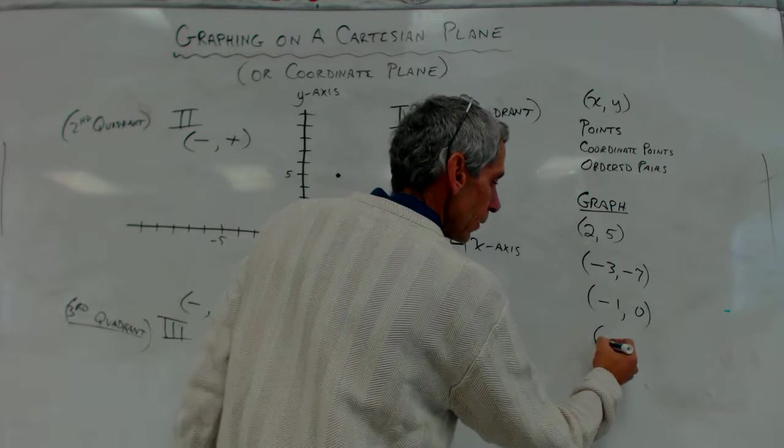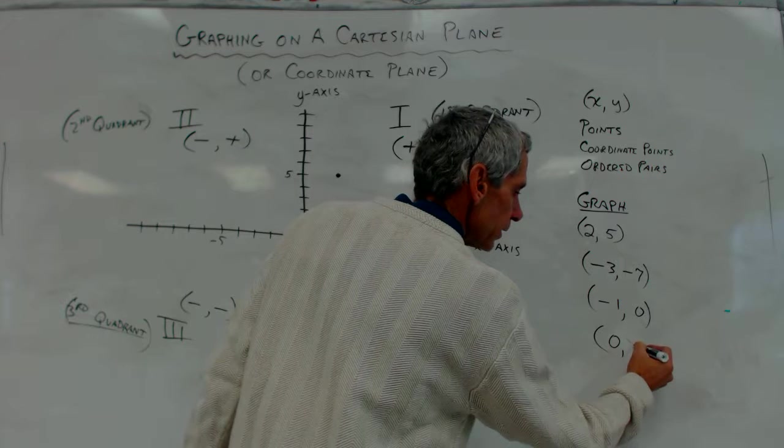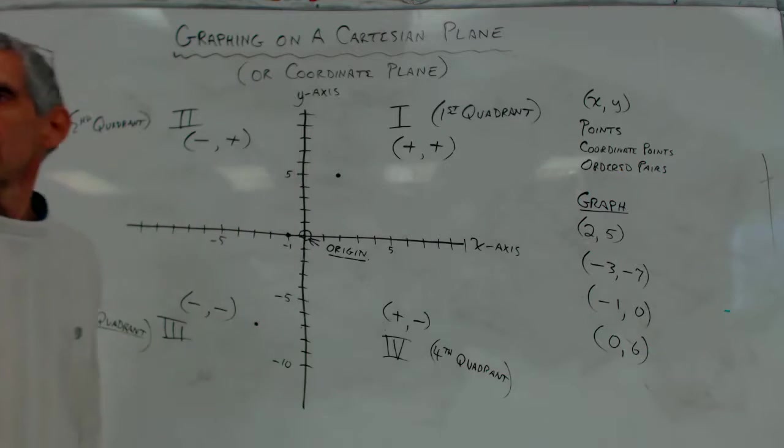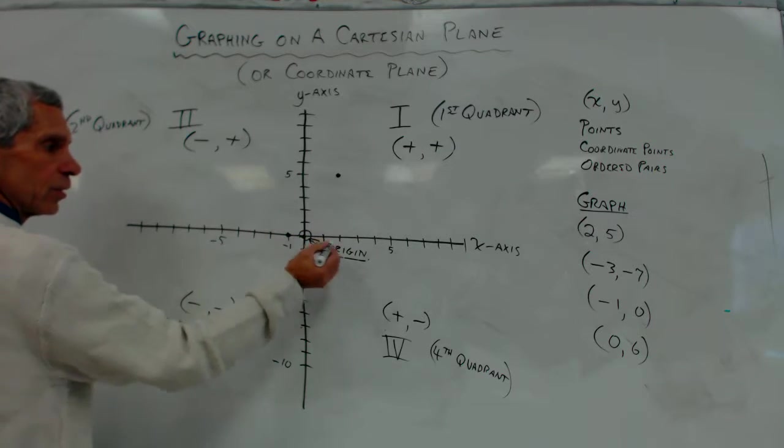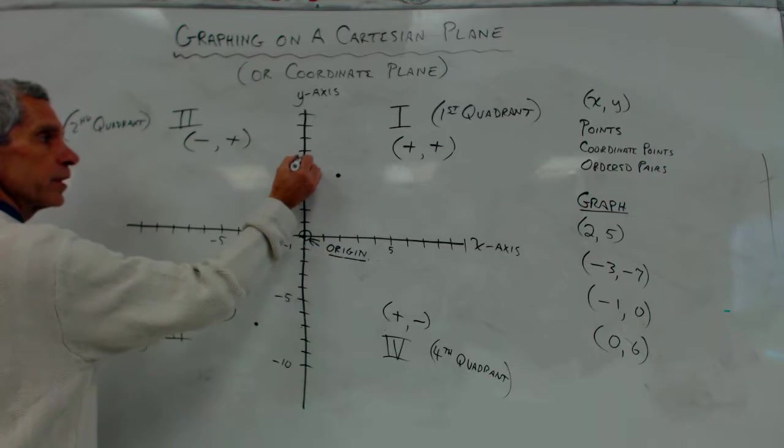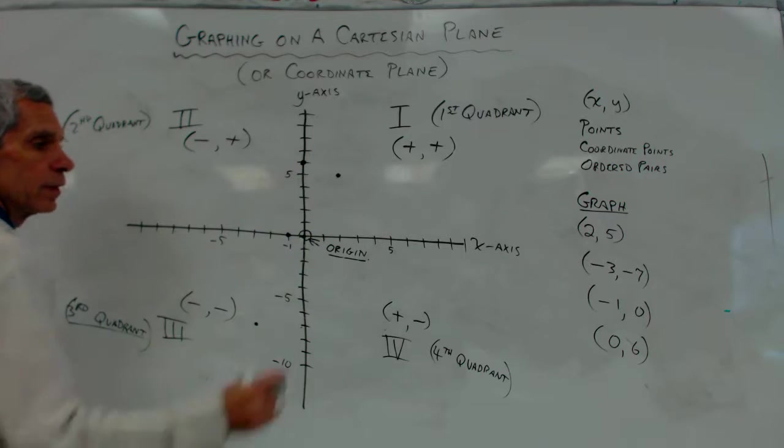What if I gave you this? Negative 1, comma, 0. You would just put the dot on negative 1 on the x-axis. Put the dot there. Why there? Because it says I don't go anywhere up and down. It just stay where I am, right? What if I said 0, 6? You would just go up 6. Because I don't go left or right at all. It says 0. So I'm going to stay here, and I go up 6, and I put a dot. Beautiful.